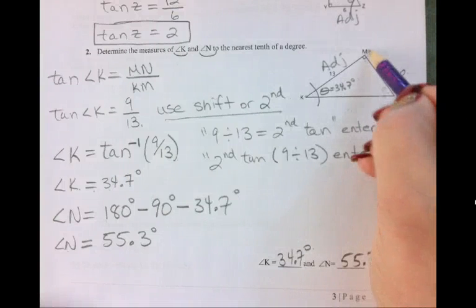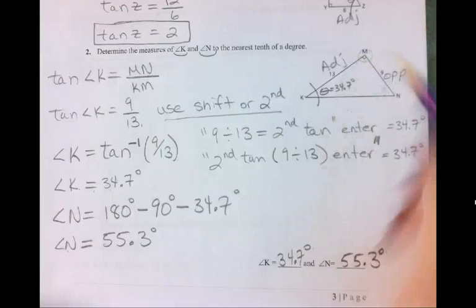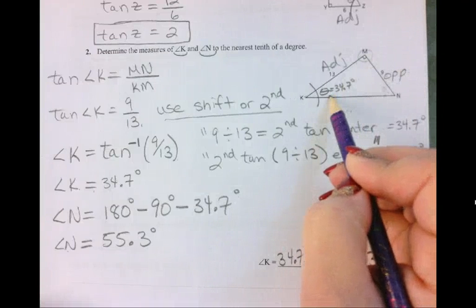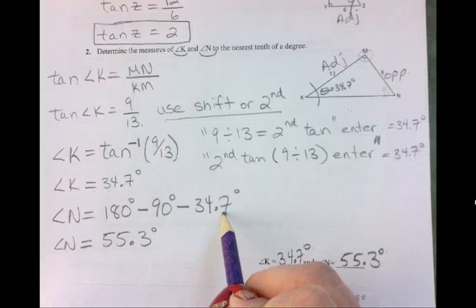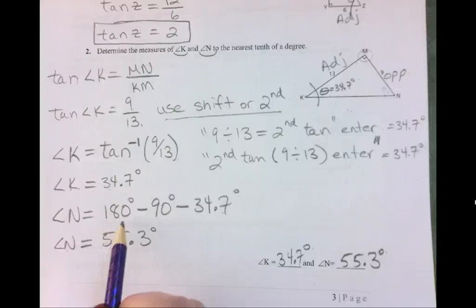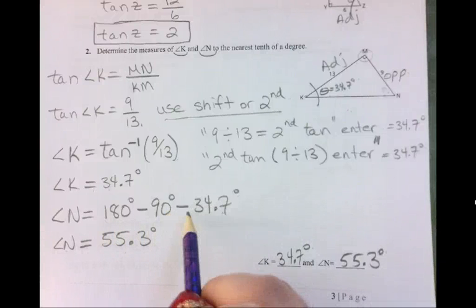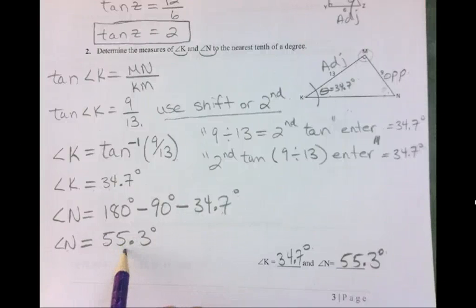So if I know that this angle is 90 degrees because of the square, and I figured out that this angle K is 34.7 degrees, then what's left over? So that's what I'm doing when I'm taking 180 minus 90 minus the 34.7 gives me what's left over from the 180.